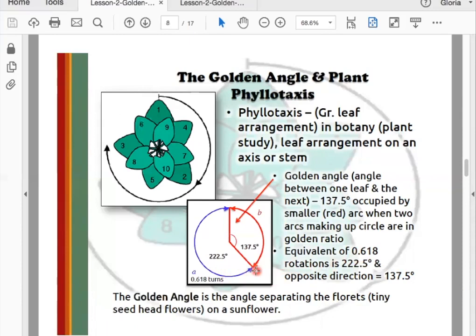These numbers give the spiral turns on plants when we see plants having spiral-turned leaves. The golden angle is the angle separating the florets - the tiny seed head flowers on a sunflower and other types of flower heads.